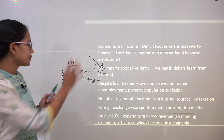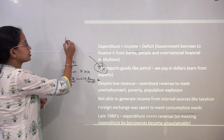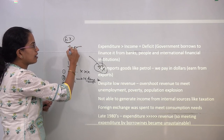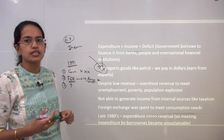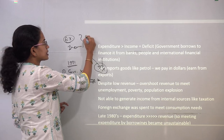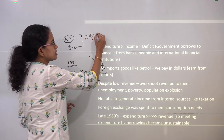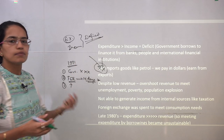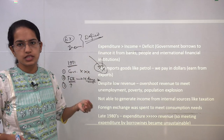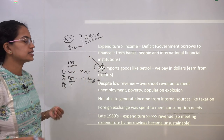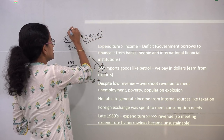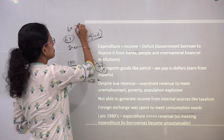During this period, the expenditure was definitely more than income. When your expenses are more than what you earn, you fall into a deficit trap, and the same happened with India. India witnessed a deficit, and during this deficit the government had to borrow money from various banks, people, or international financial institutions.